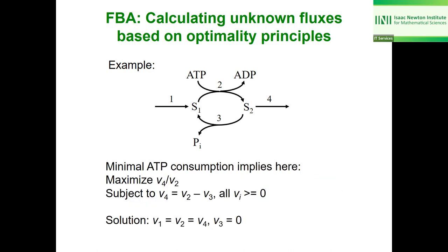Mathematically, since we consider a yield as a product-to-substrate ratio, we maximize the ratio of v4 over v2, subject to the steady-state condition that v4 equals v2 minus v3, and assuming all reactions are irreversible (non-negative). The solution is: v1 equals v4 equals v2, and v3 equals zero.